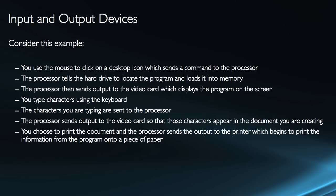At that point, I type in characters — I'm using the keyboard and giving it more input. The characters I'm typing are sent to the processor, and the processor sends output to the video card, which connects to your monitor so that those characters display and you can see what you're doing. Then, at the end, you choose to print. The processor sends the output to a printer, and the printer prints the information from the program out onto a piece of paper.